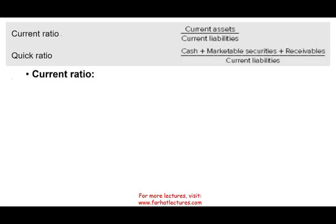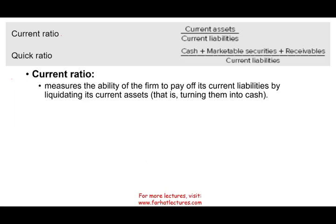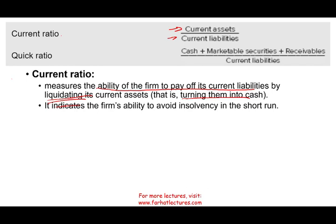Starting with the current ratio: the current ratio is simply taking current assets divided by current liabilities. It measures the ability of the firm to pay its current liabilities by liquidating — meaning turning — its current assets into cash. It indicates the firm's ability to avoid insolvency in the short term.